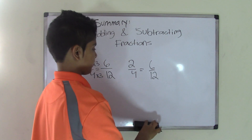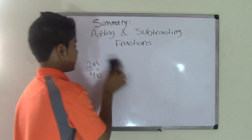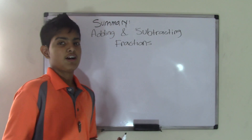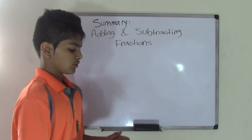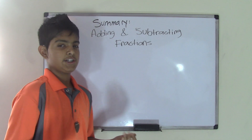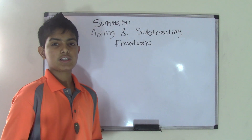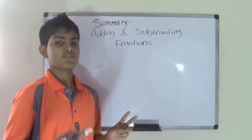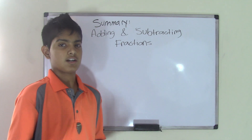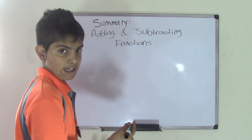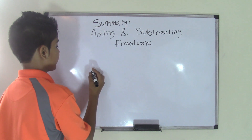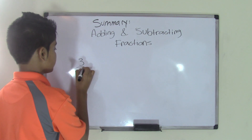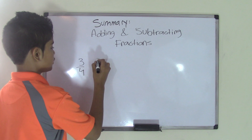Now, how to find common denominators. Common denominators are two denominators of fractions — two fractions that are common, meaning they're the same. So let's take the two fractions three-fourths and two-thirds, and we need to find the common denominator for both of them.